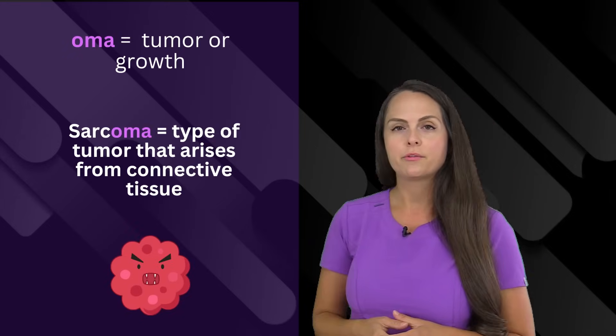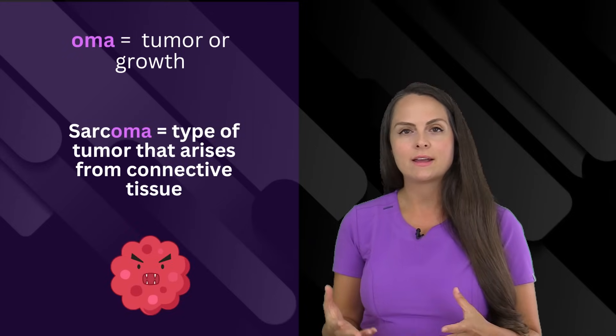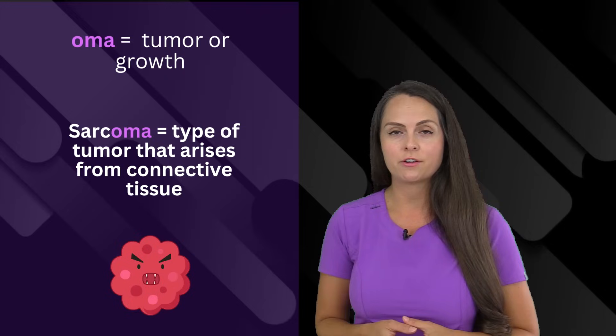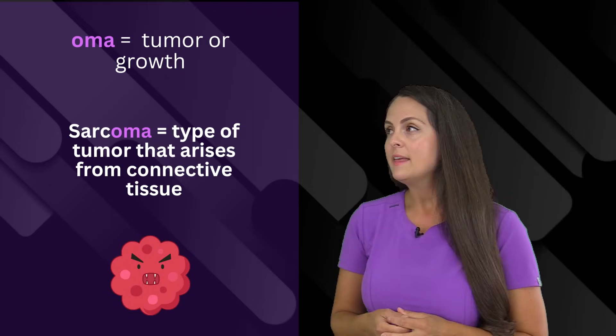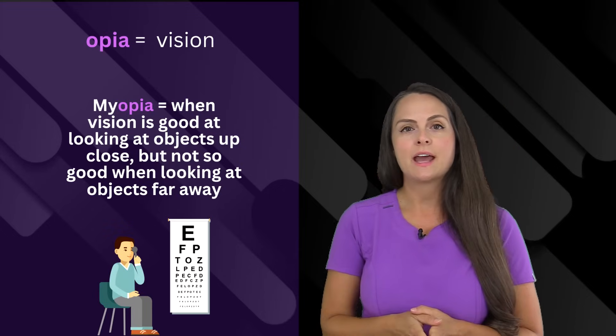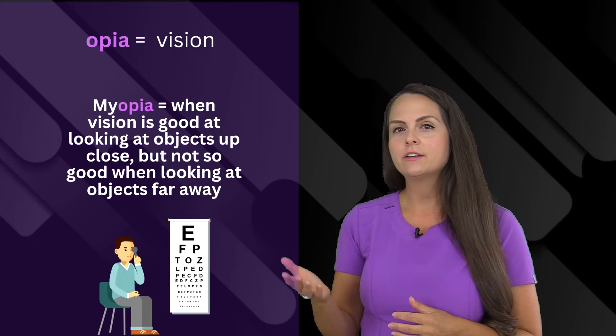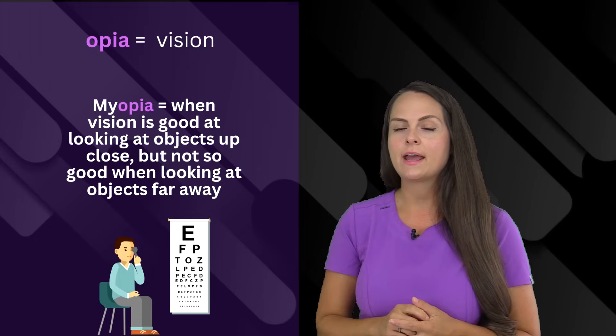Oma means tumor or growth. If a person has a tumor or growth that's mainly arising from the connective tissue, we would term that as sarcoma. Then we have opia. This means vision. When a person has myopia, meaning they're nearsighted, that means that they have really good vision up close, but far away, not so much.